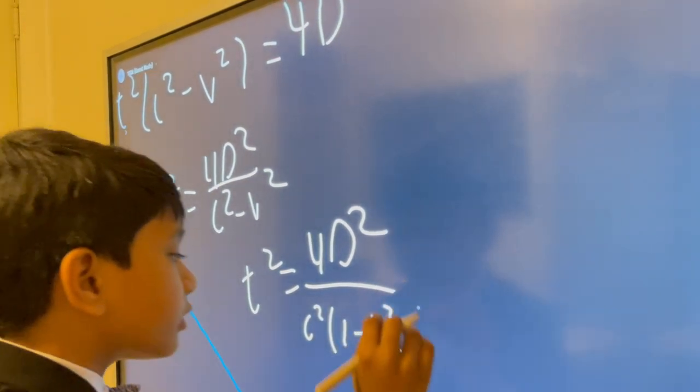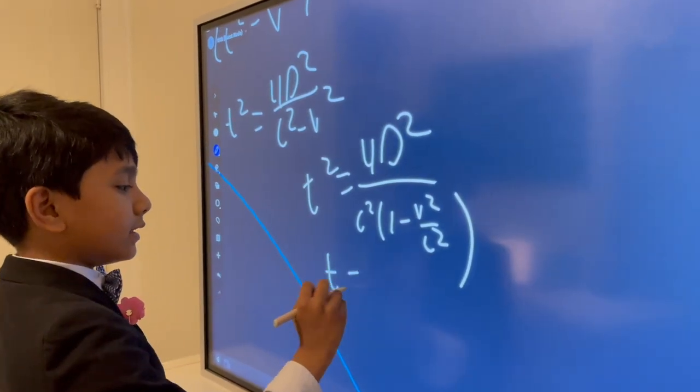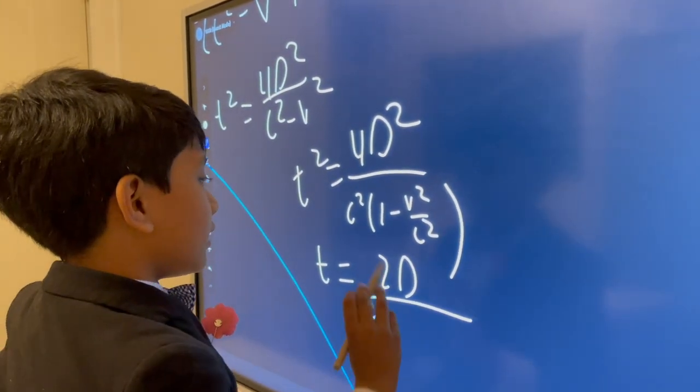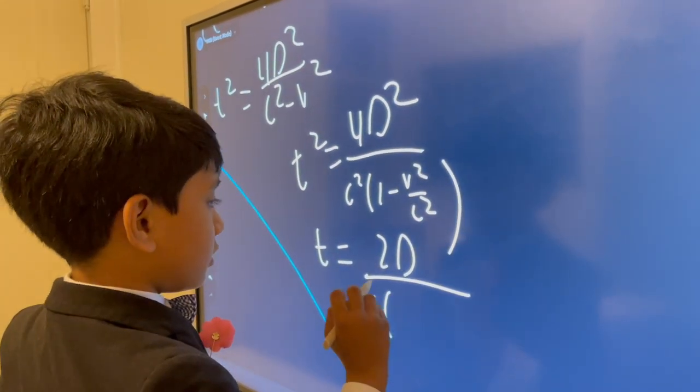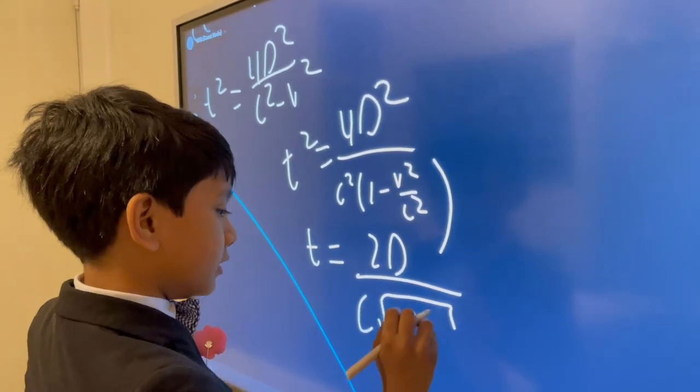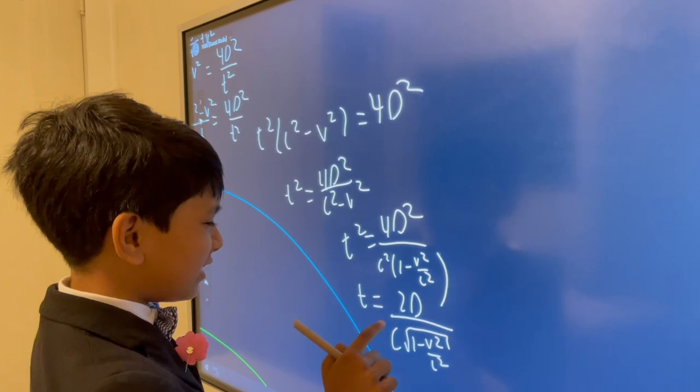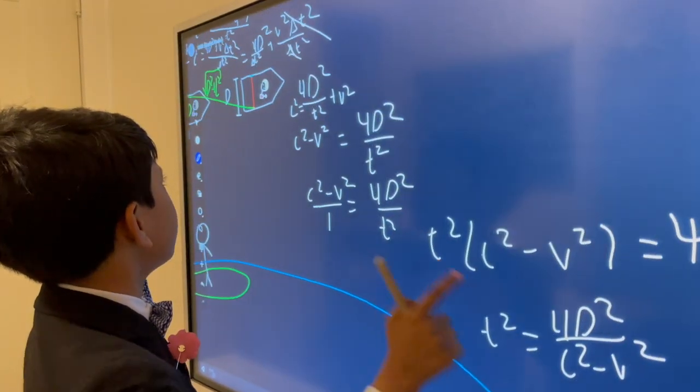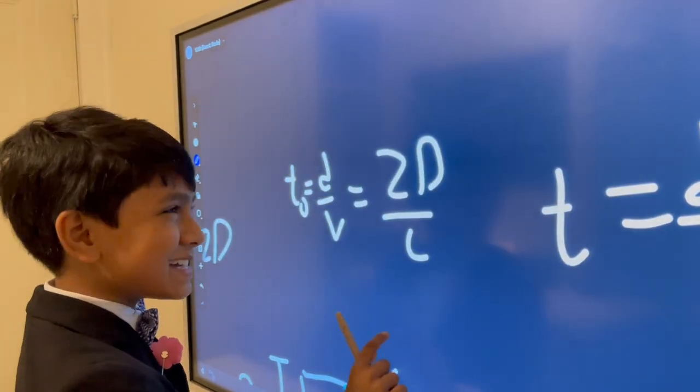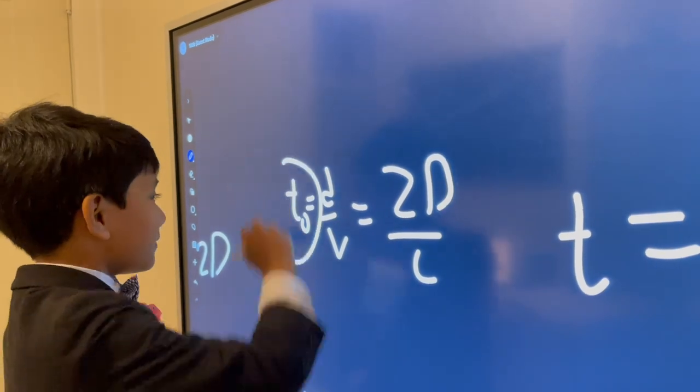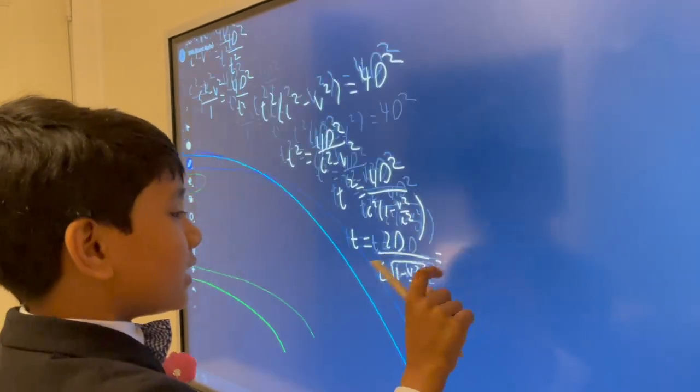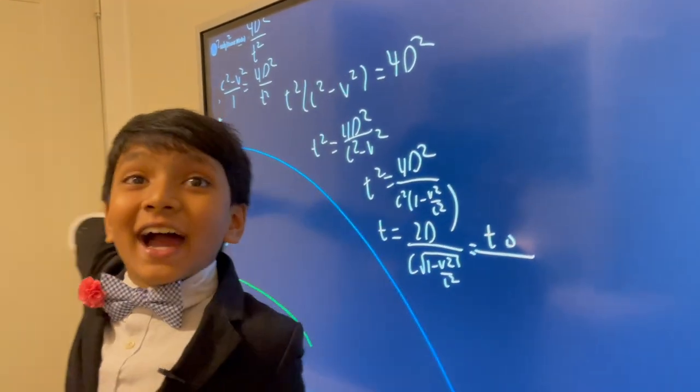We're in the final stages guys: 2d over c, 1 minus v squared over c squared. I guess I have to square root that. 1 minus v squared over c squared. Wait a second, 2d over c, that seems kind of familiar. Can I find that somewhere before? T naught! And that folks is the equation for time dilation.